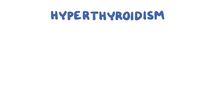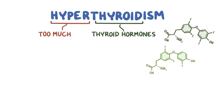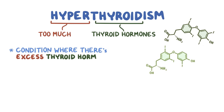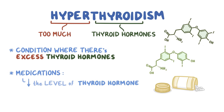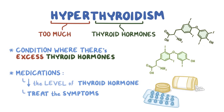In hyperthyroidism, hyper refers to having too much, and thyroid refers to thyroid hormones, so hyperthyroidism refers to a condition where there's excess thyroid hormones. Medications used to treat hyperthyroidism either reduce the level of thyroid hormones or treat the symptoms by targeting the affected tissue.